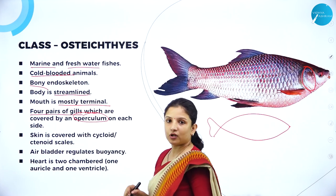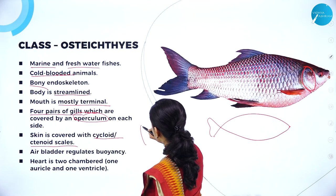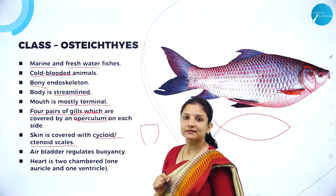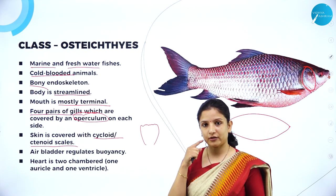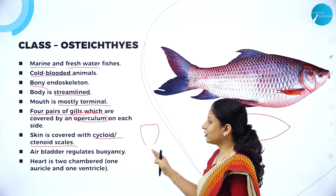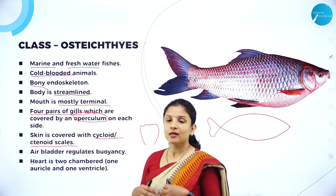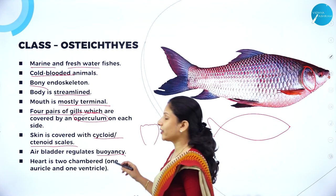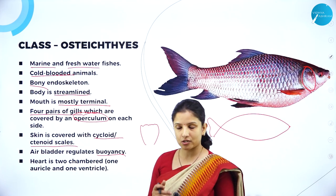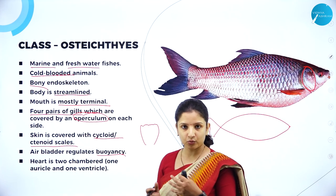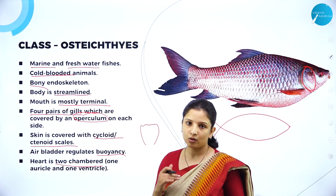The skin is covered by cycloid or ctenoid scales, unlike Chondrichthyes which had placoid scales resembling small teeth. Osteichthyes have an air bladder, which gets filled with air and gives them buoyancy — they are capable of floating in water, so even if they stop swimming they will not drown. They have a two-chambered heart with one auricle and one ventricle.